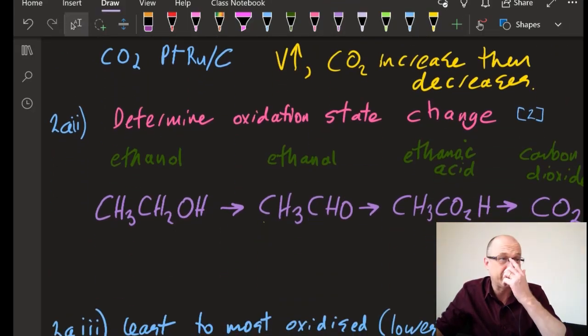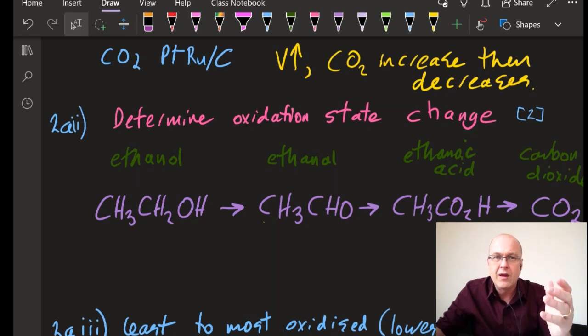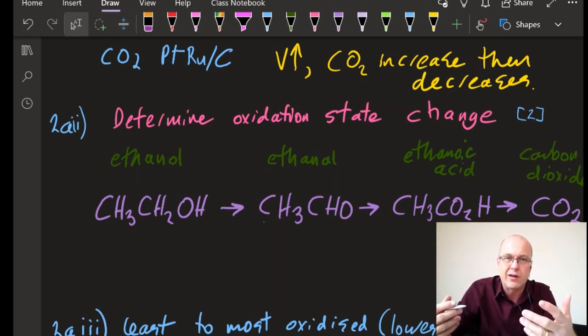Question 2AII: determine the oxidation state change for three of those four chemicals. I'm actually going to do it for all of them. If you recall your oxidation state rules, there is no rule for carbon because it changes so much. The rule for hydrogen in a compound is it's +1 unless it's with a metal, then it's -1. No metals here, so hydrogen's +1 oxidation state. Oxygen in a compound is -2 unless it's H2O2, then it's -1. That exception doesn't apply here.